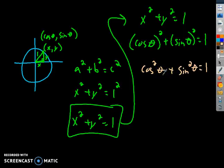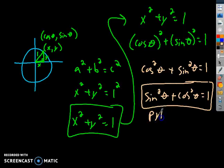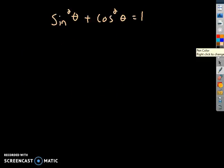A lot of times you see sine written first, so they don't always write sine second. Some people just have to see sine first, so sometimes you say sine squared plus cosine squared equals 1. This is the Pythagorean identity. The reason we call it that is it's derived from the fact that x squared plus y squared equals 1 on a unit circle, and we hold it true for everything we do in trig.